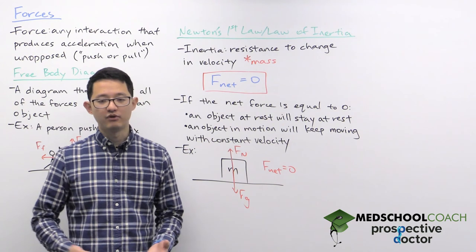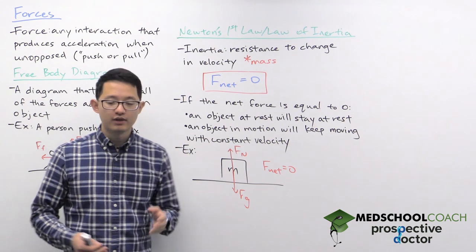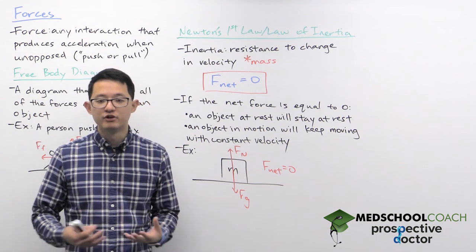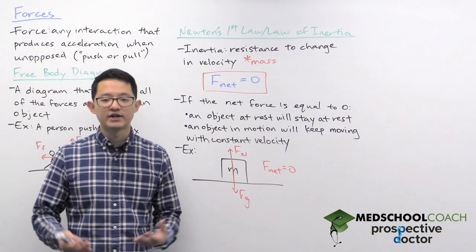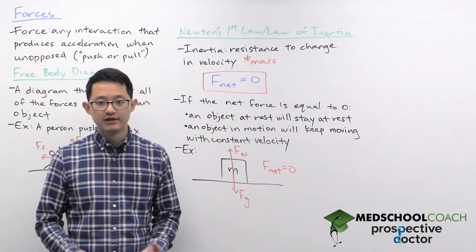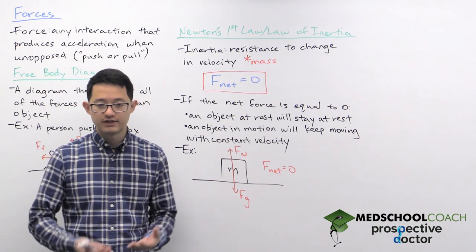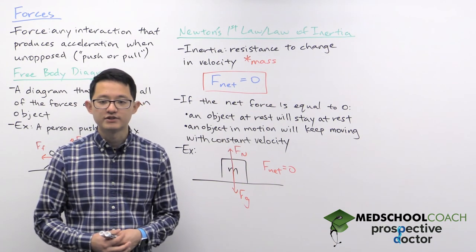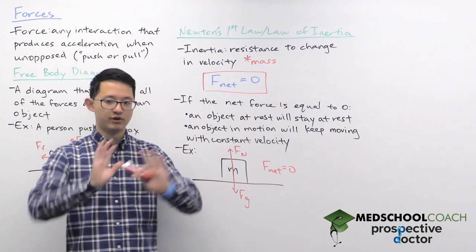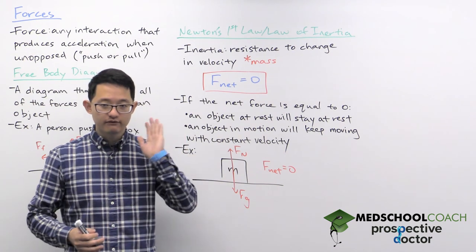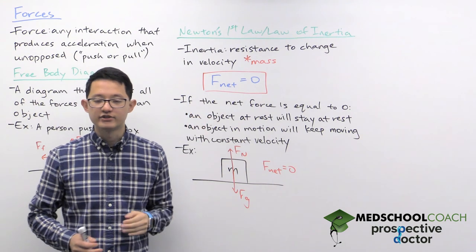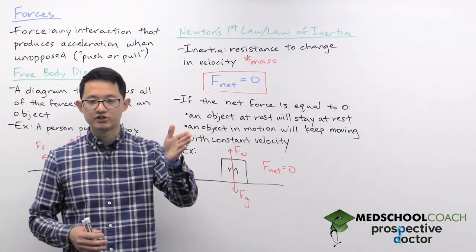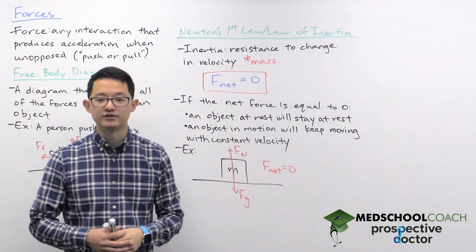So a better example of where Newton's first law applies and where an object in motion will continue in motion with constant velocity would be looking at objects in space. So in space, objects essentially aren't experiencing any forces. So if you take an object and you push it in one direction, whatever velocity it has, it's going to maintain that velocity and just keep moving in the same direction and with the same magnitude of speed.